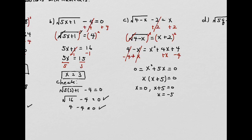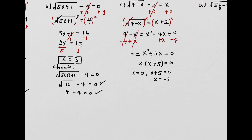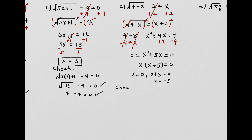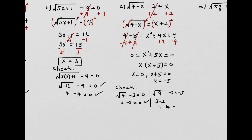We have two solutions, so we check both. When x equals 0: square root of 4 minus 0 minus 2 equals 0, which gives 2 minus 2 equals 0 — that's true. When x equals negative 5: square root of 4 minus negative 5 is square root of 9, which is 3, and 3 minus 2 is 1, not negative 5. So x equals negative 5 doesn't work. We can only keep x equals 0.